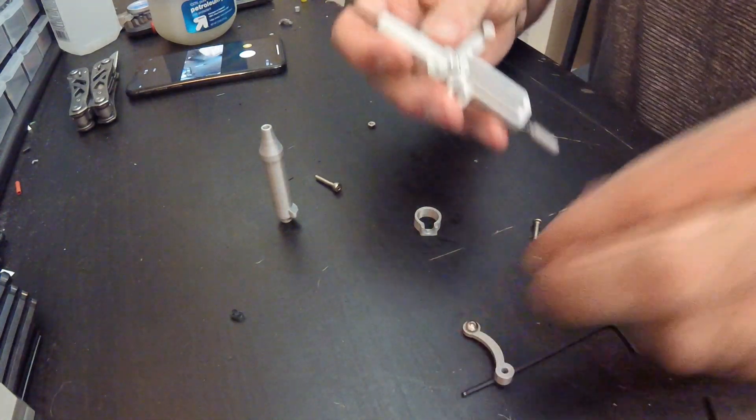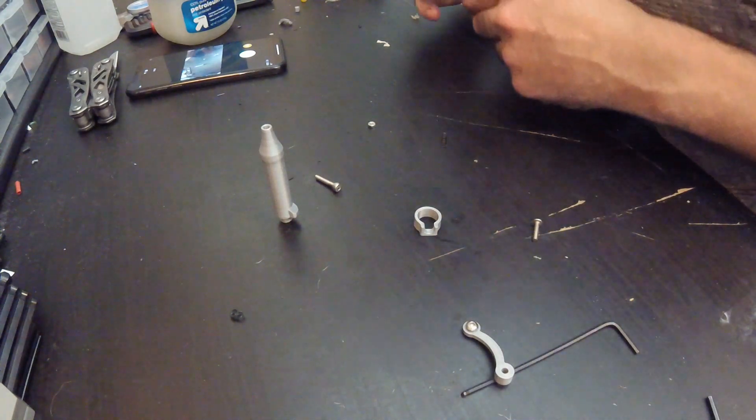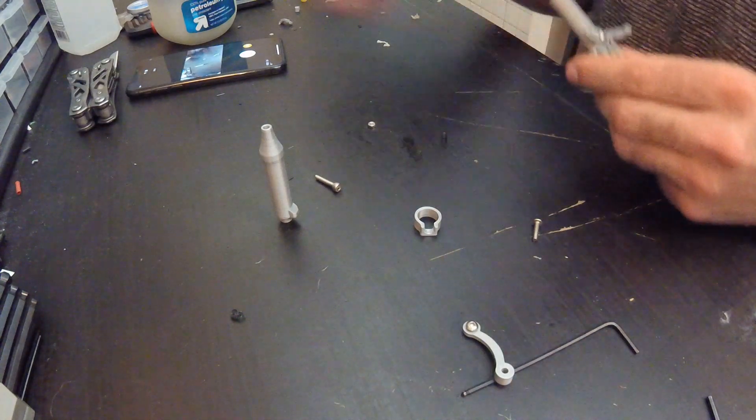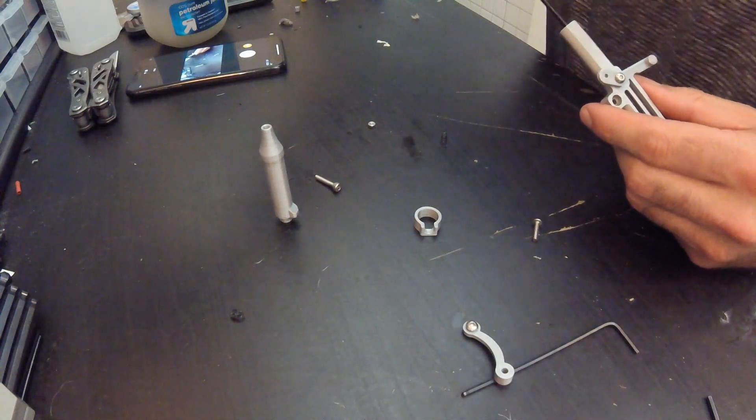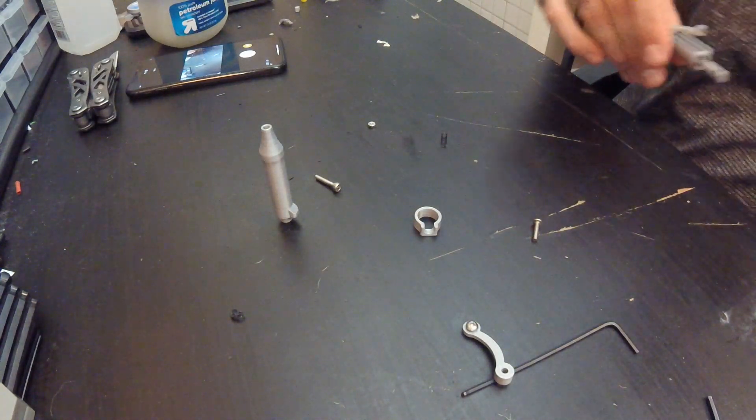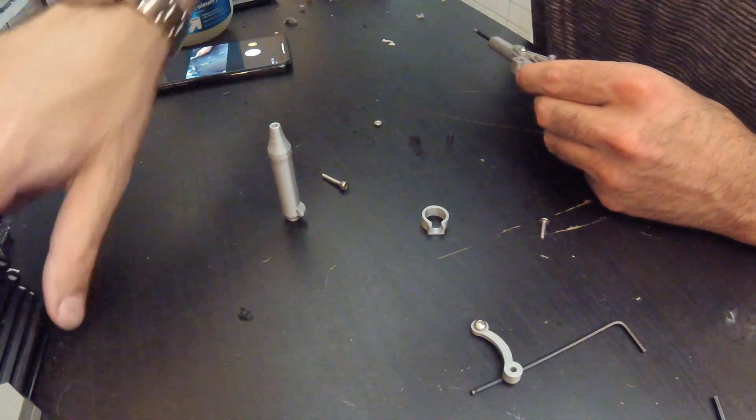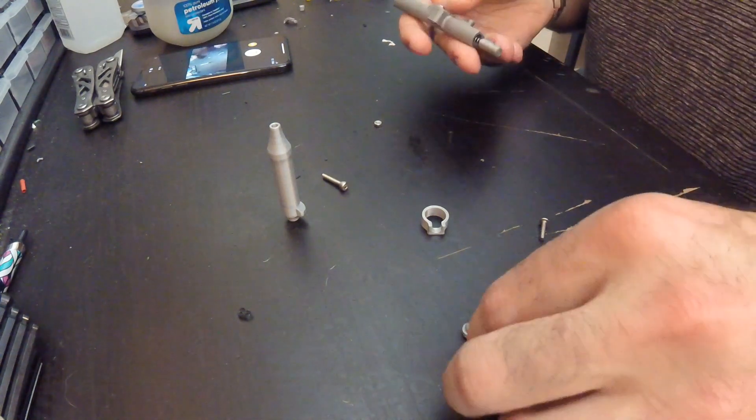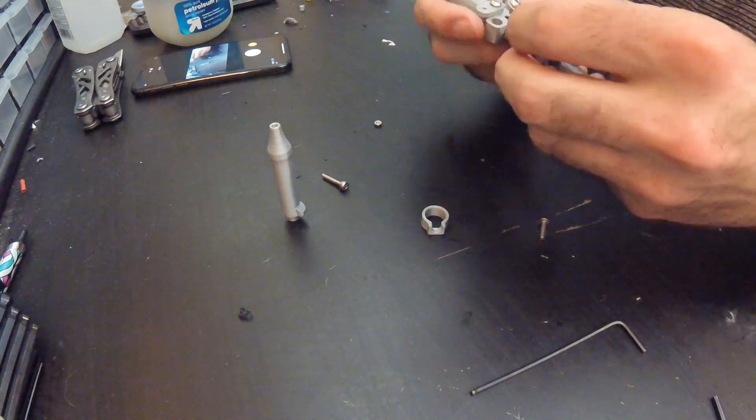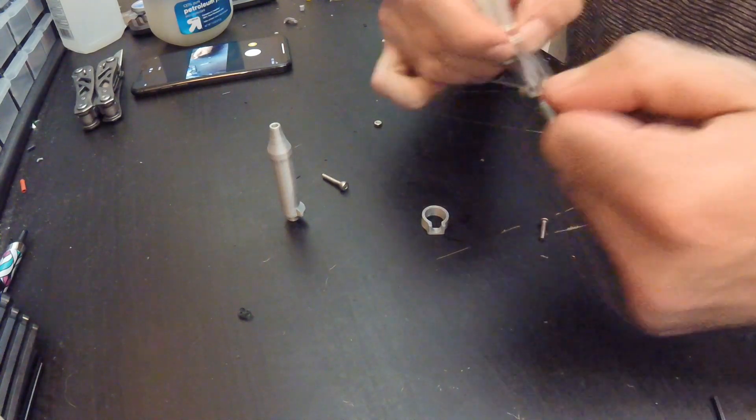Actually, I'm gonna go and thread this real quick with an M3 tap. I seem to have lost it. I think I can get away without it. But oh, my trusty M3, where'd you go? Hmm, I might be okay without it. We'll thread right into the plastic. If that doesn't work, I'm gonna have to find that tap.